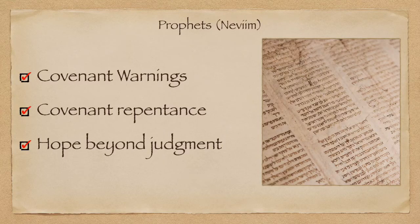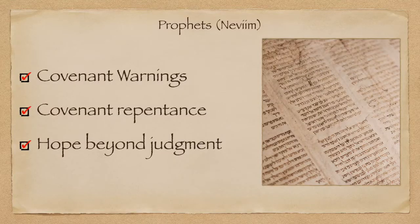That's the narrative of the Hebrew canon. The prophets generally did three things: covenant warning — warning God's people not to break the covenant; covenant repentance — telling God's people to repent and turn or else; and there's this incredible hope beyond judgment, hope of restoration even at its worst.